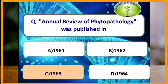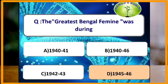The Annual Review of Phytopathology was published in the year 1963. The greatest Bengal famine was during which year? Brown spot of rice is the major cause for the Bengal famine, and brown spot of rice is caused by Cochliobolus miyabeanus.